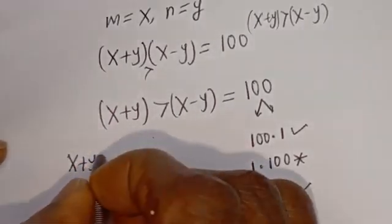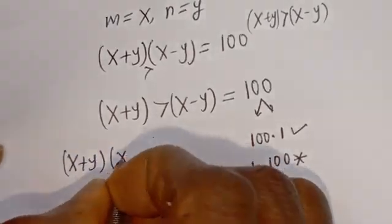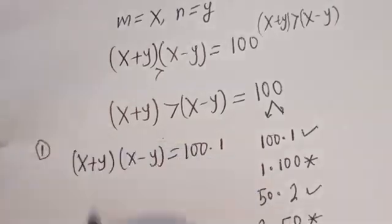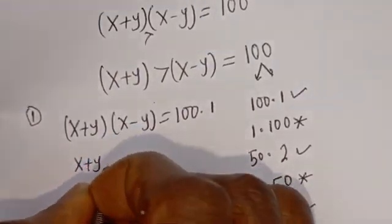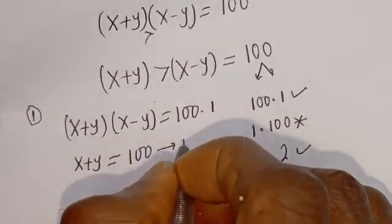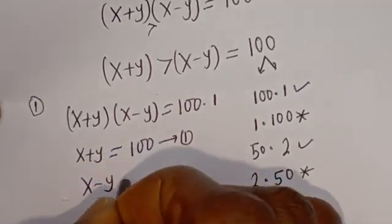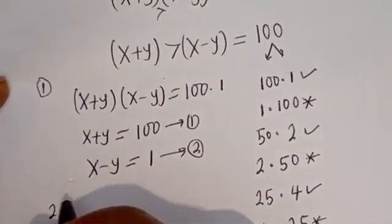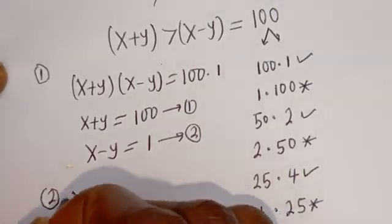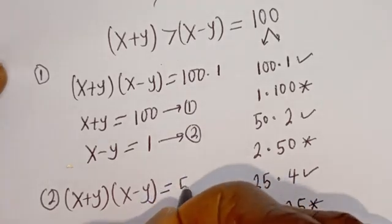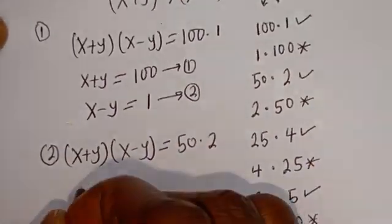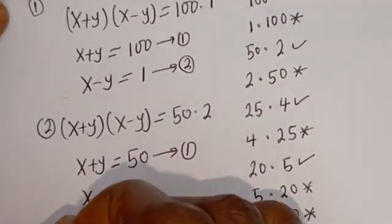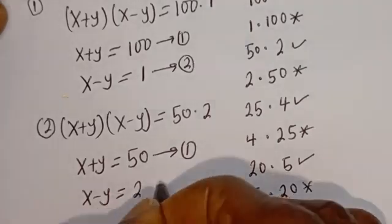Case 1: (x + y)(x − y) = 100 × 1. So x + y = 100 (equation 1) and x − y = 1 (equation 2). Case 2: (x + y)(x − y) = 50 × 2. So x + y = 50 (equation 1) and x − y = 2 (equation 2).